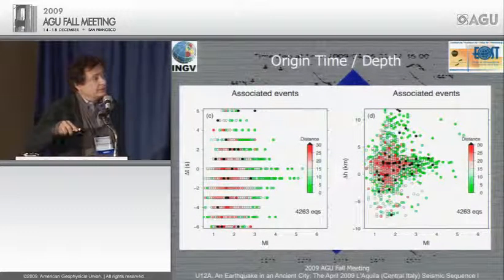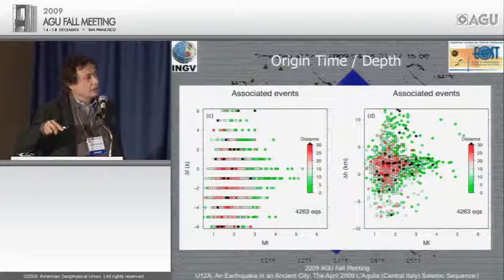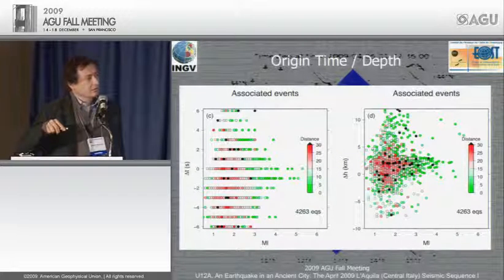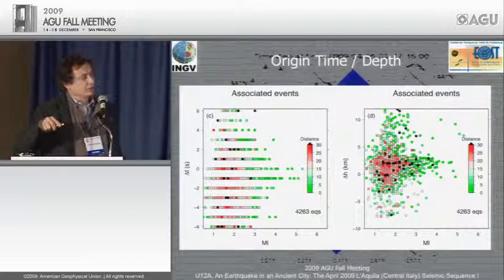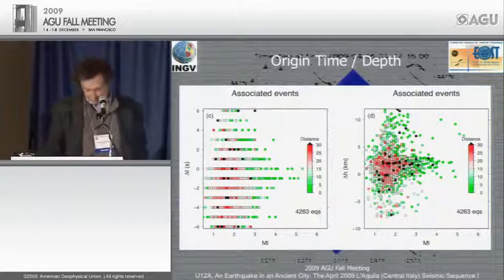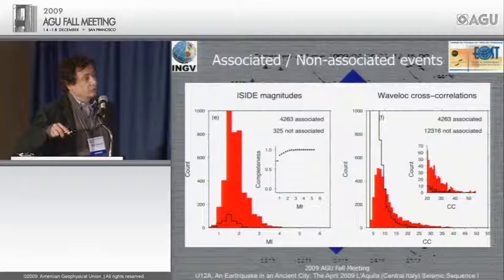Origin time differences are centered around zero. Epicentral location differences between ISIDE and WaveLoc for different depths show that you can get good epicentral locations regardless of earthquake depth.